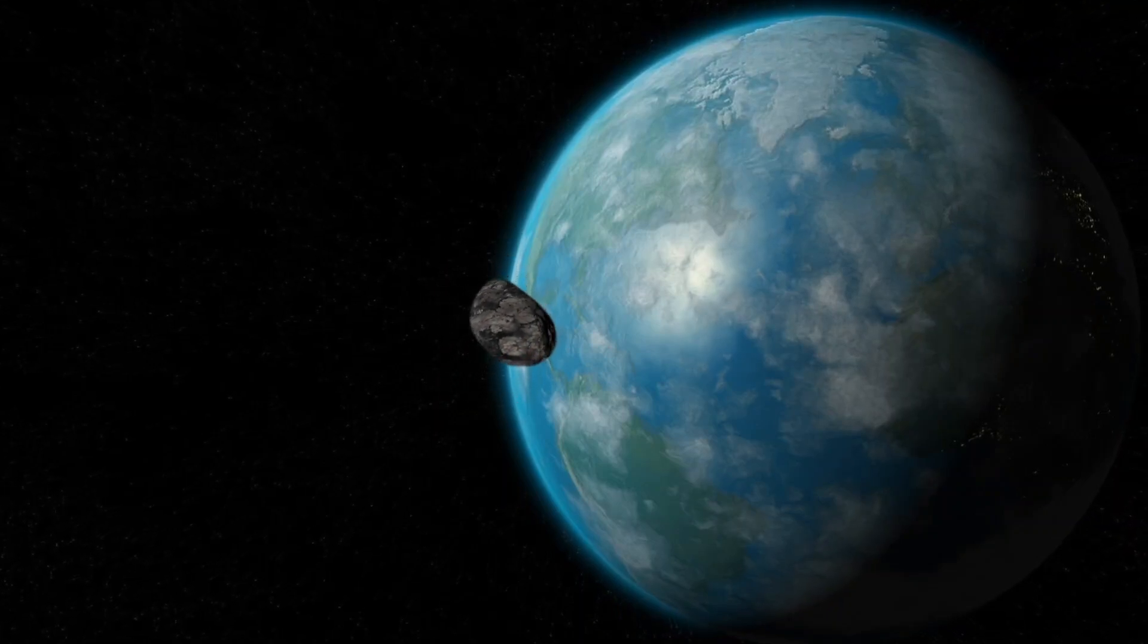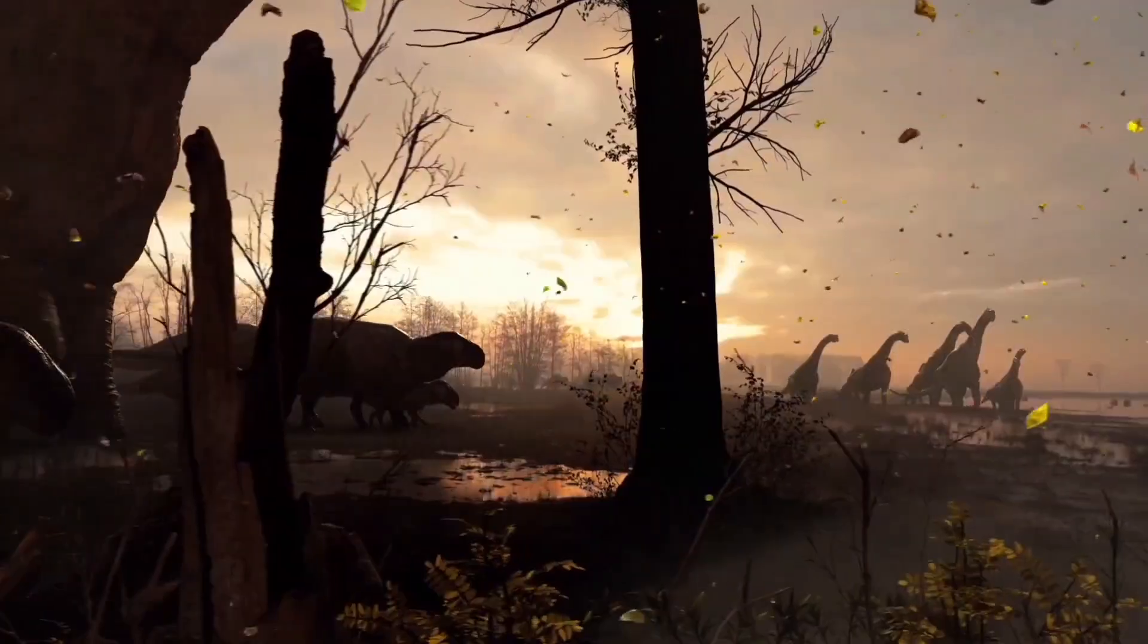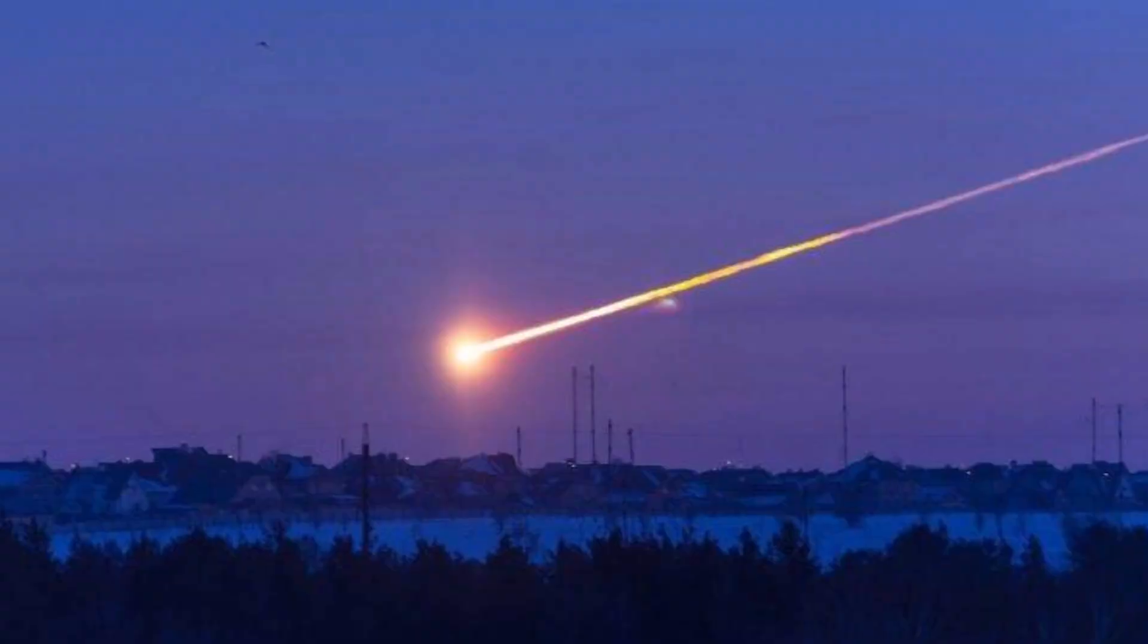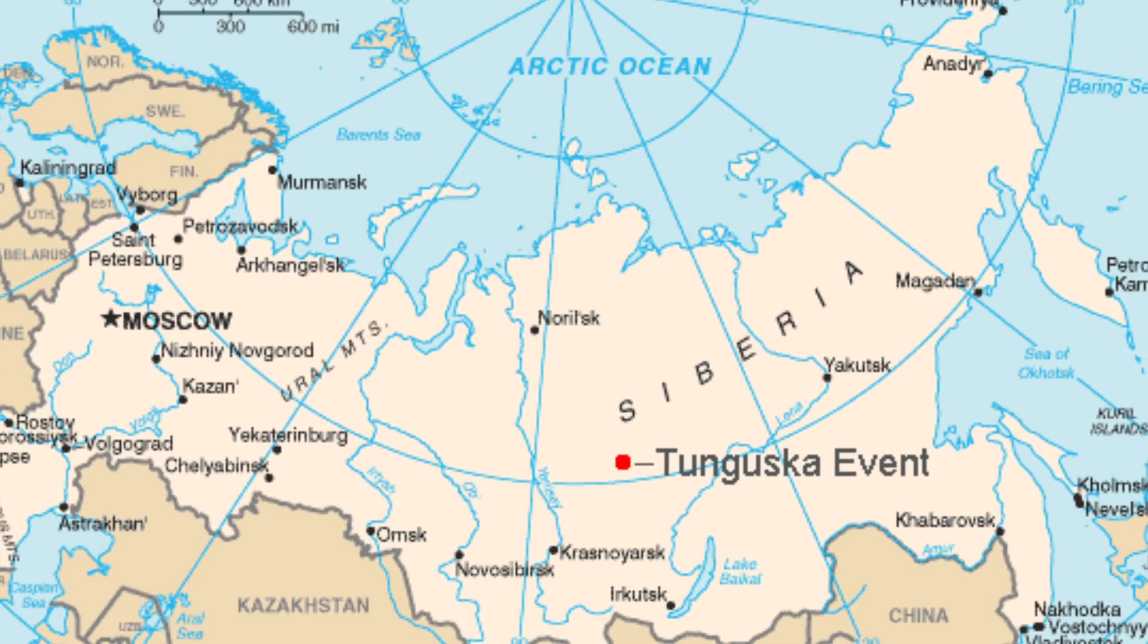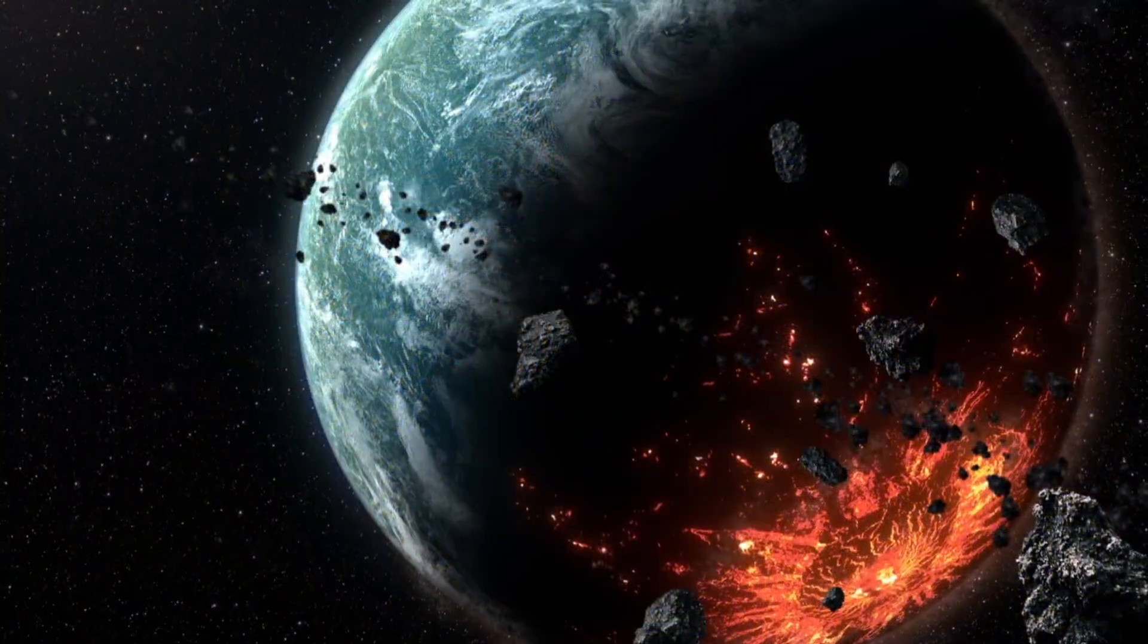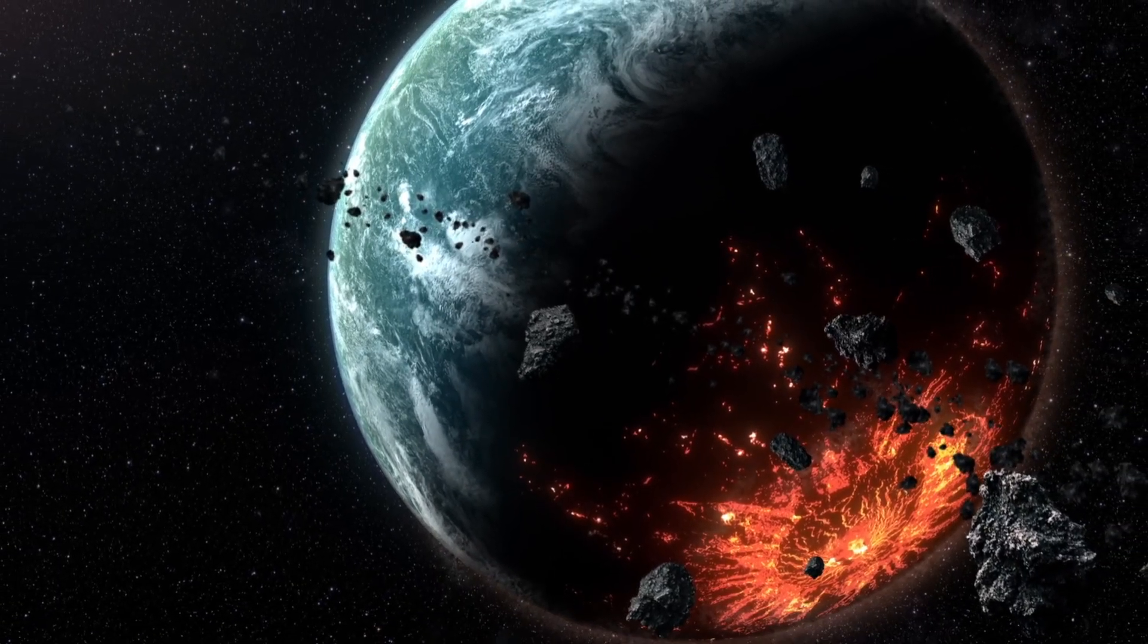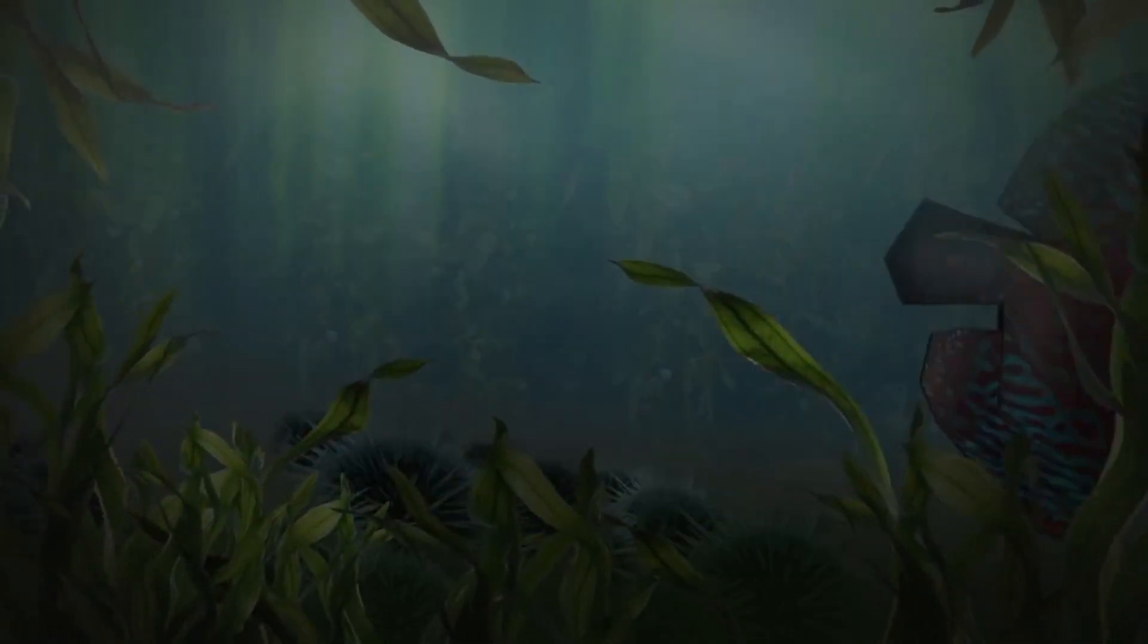We all know meteorites can be a real nightmare. Just look at the Chicxulub asteroid that ended the dinosaurs, or the 1908 Tunguska event that hit Siberia with a blast the power of a nuclear bomb. But what if a massive meteorite strike billions of years ago helped life thrive on Earth instead of destroying it?